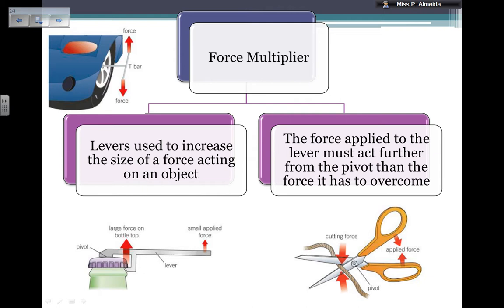For example, in airplanes, you are piloting an airplane and the pilot wants to steer to the right. He doesn't need to make a huge force in the cockpit to steer to the right, because the airplane has a force multiplier, and his force is going to be multiplied to move the whole airplane. And the force applied to the lever must act further from the pivot than the force that he has to overcome.